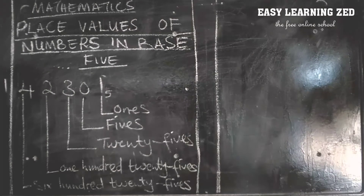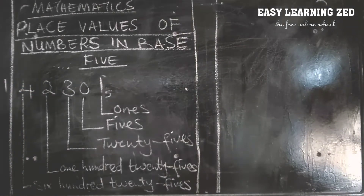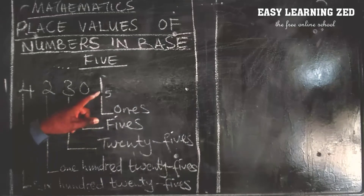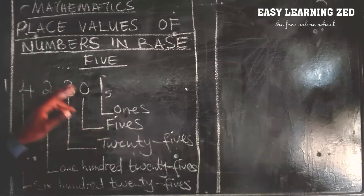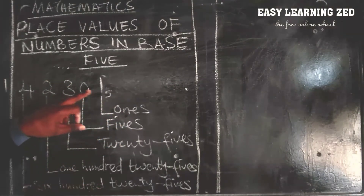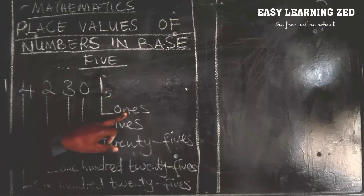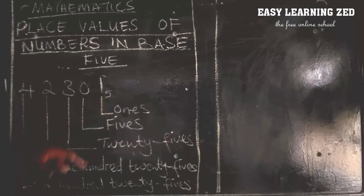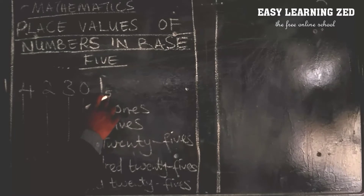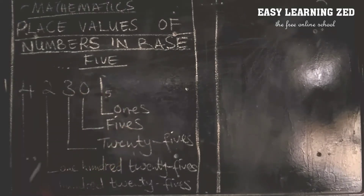So what is the logic in finding the place value of numbers in base five? The logic is simple: the first number in all number bases has the place value of ones. To find the place value of the next number from the right, we multiply one by the base number which is five — one times five — which gives us five, which is the next place value.